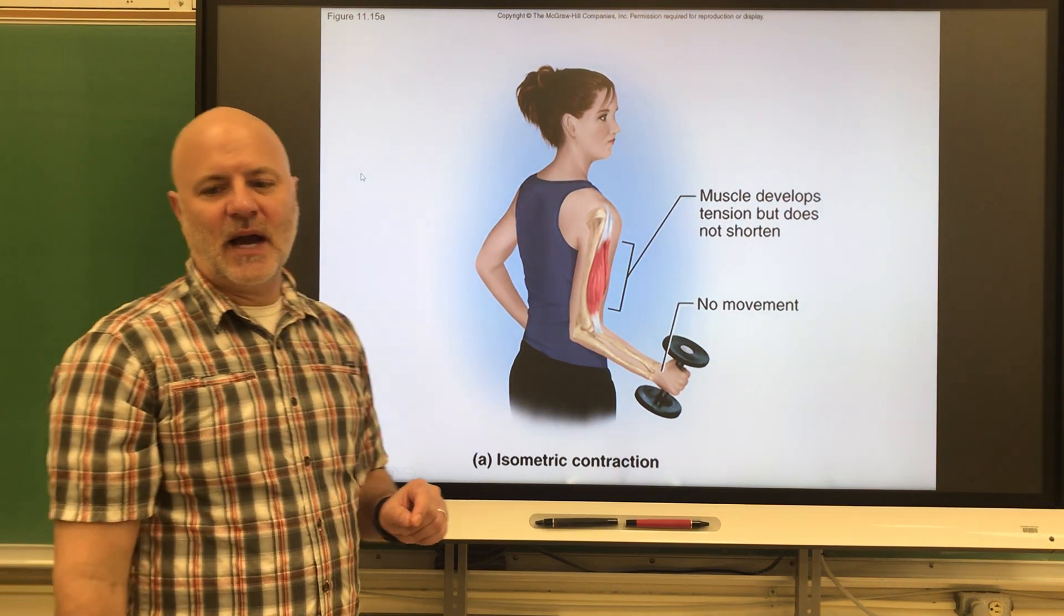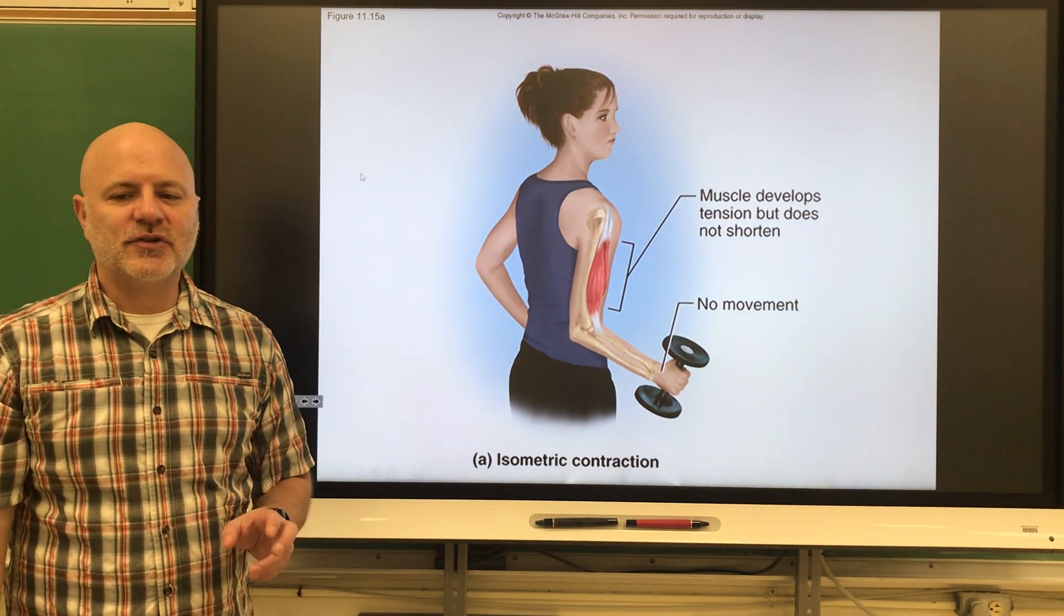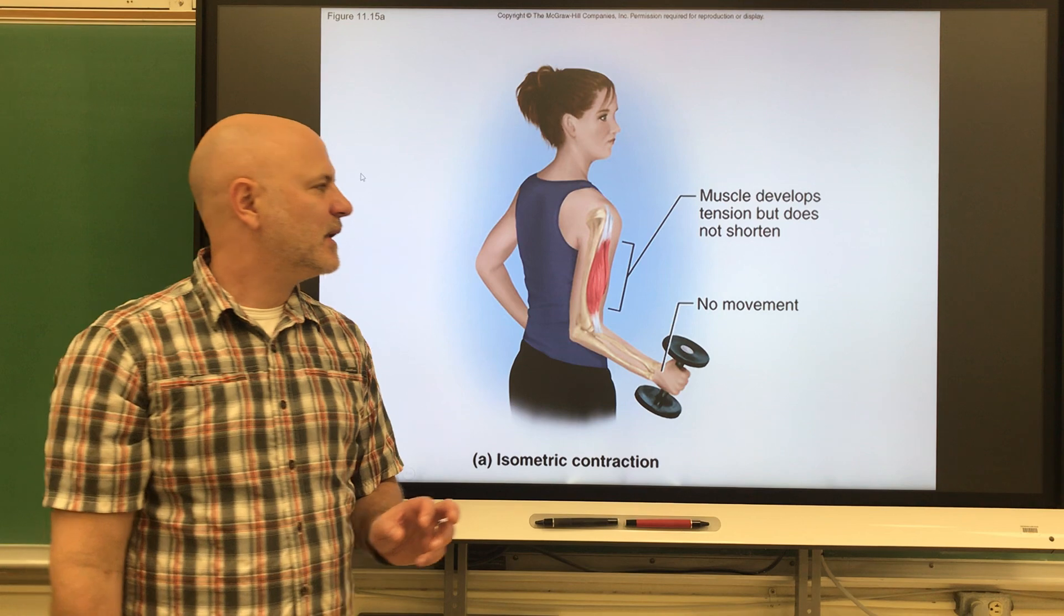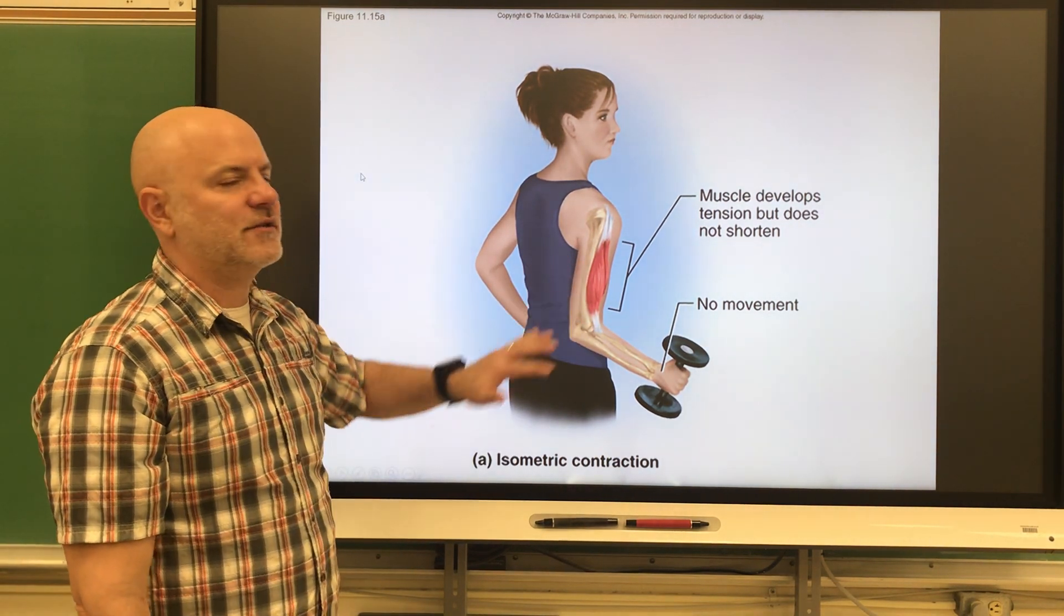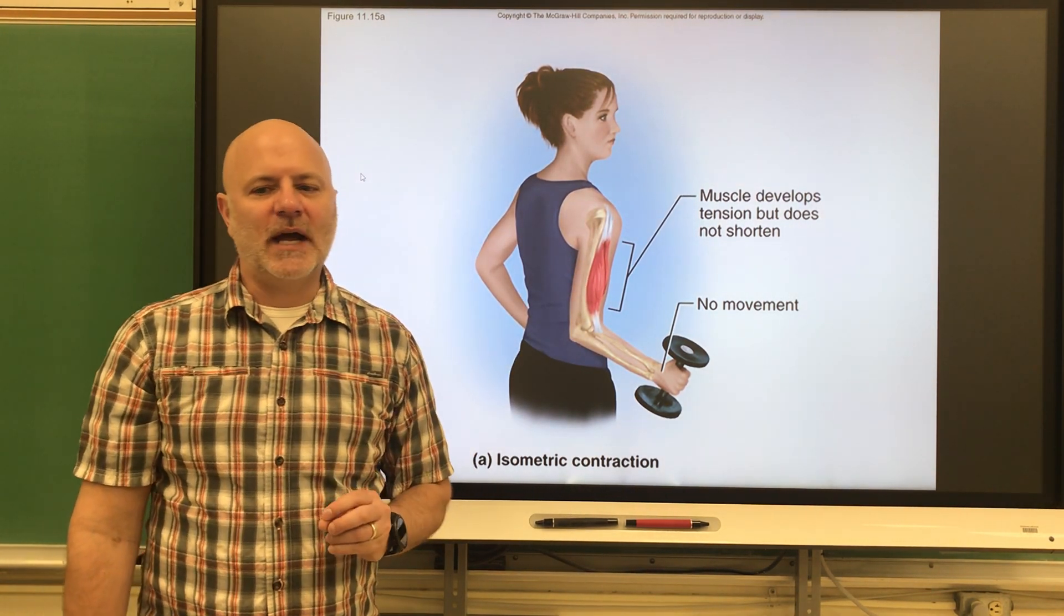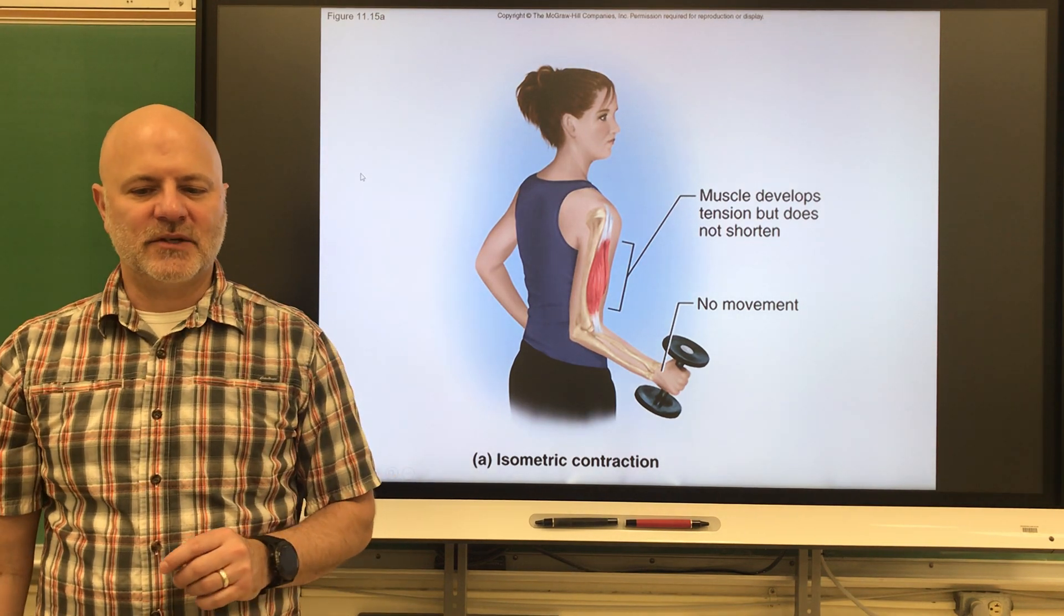Next is an isometric contraction, a contraction in which a muscle does not change in length. If she's just holding that barbell there, muscles are going to be contracted. They're not changing in shape. That's an isometric contraction.